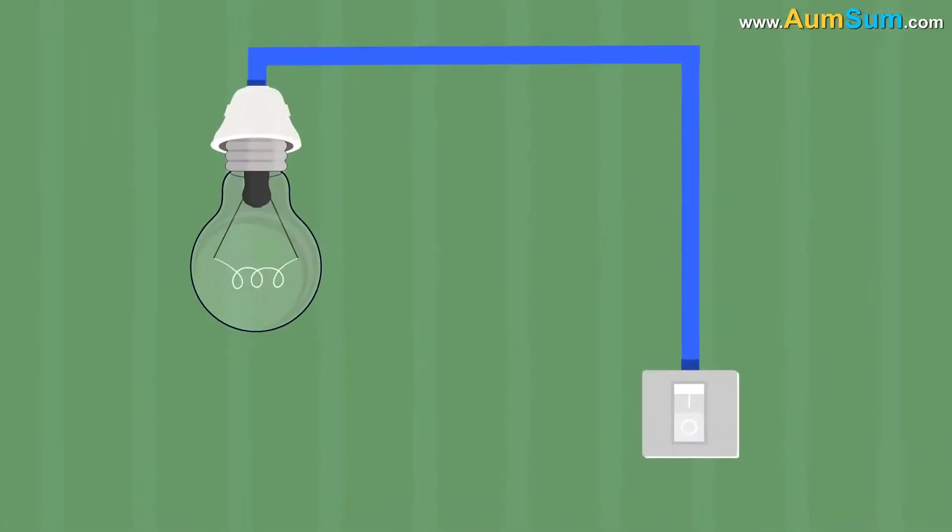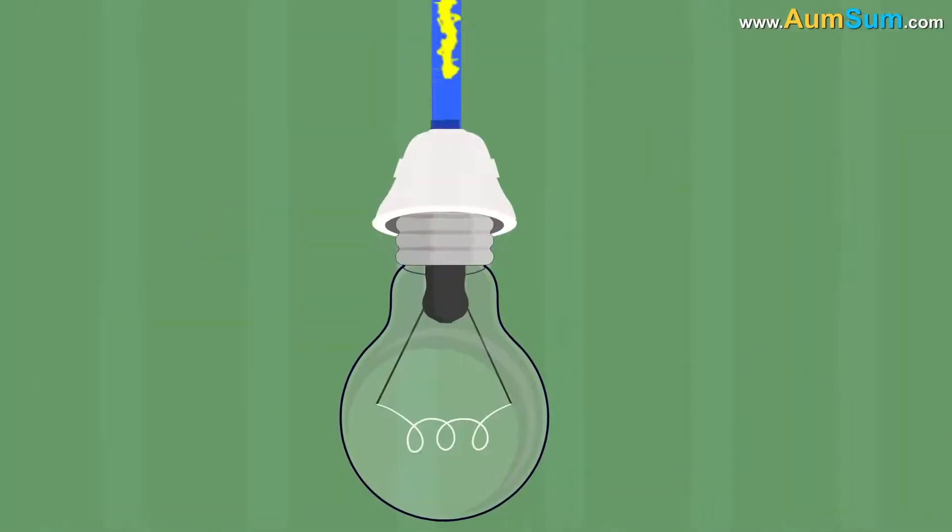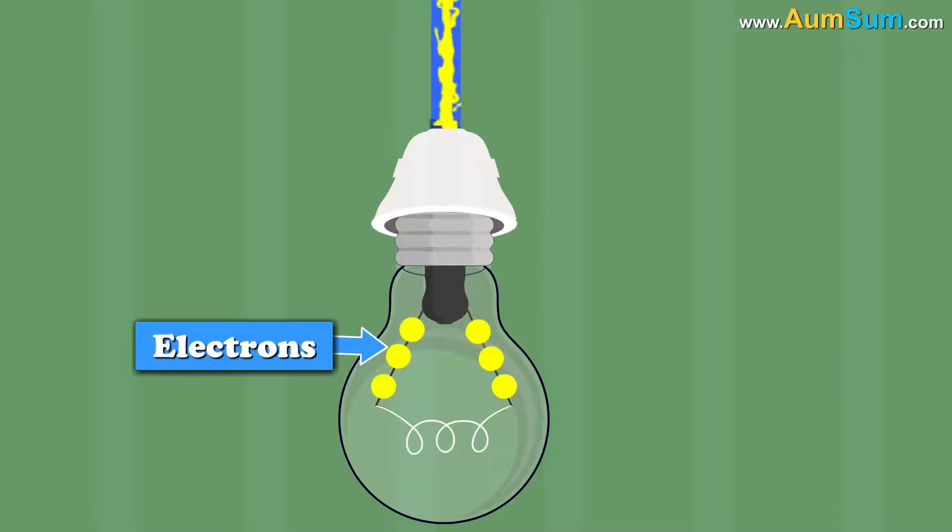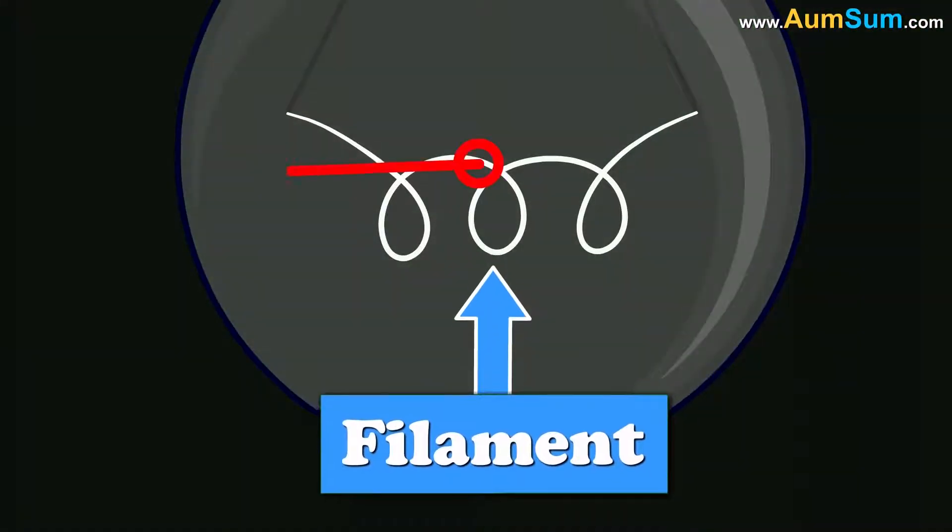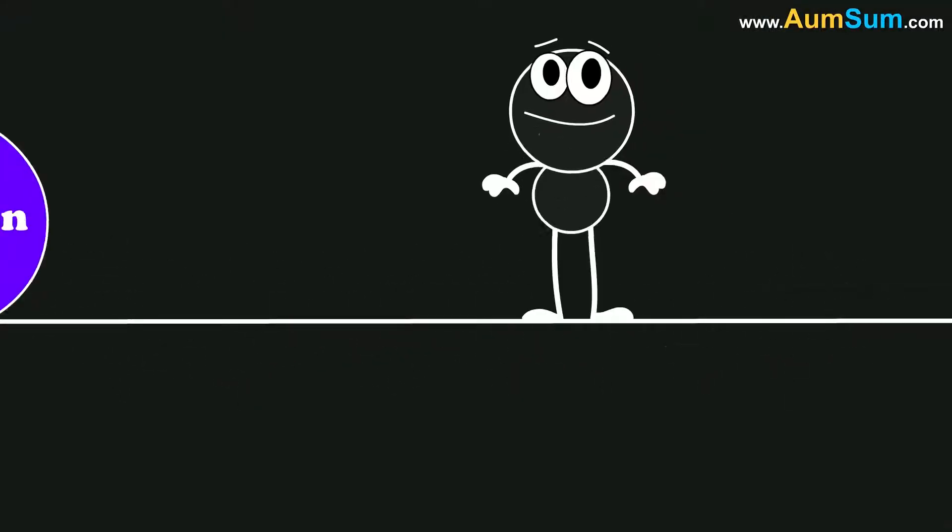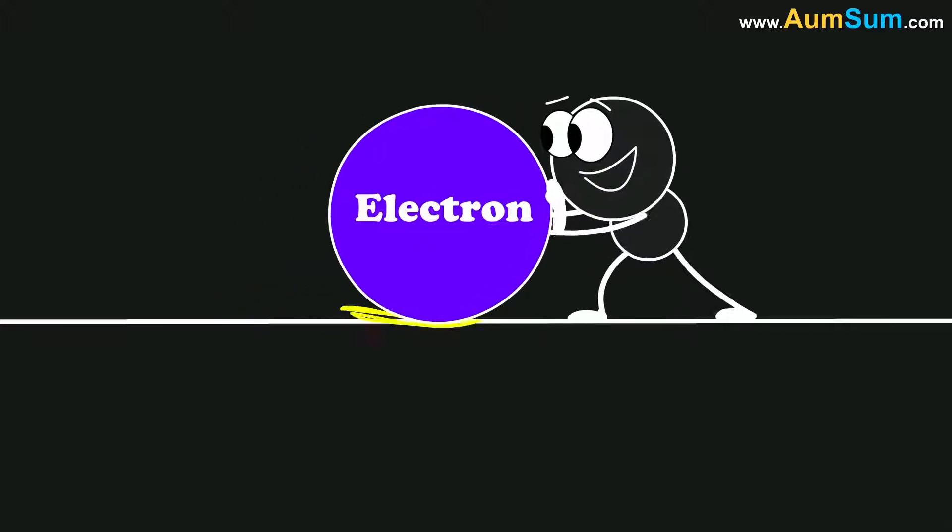When we switch on the bulb, electricity starts flowing. This electricity or the flow of electrons is hindered by the filament of the bulb. The filament is usually made of tungsten as it has a high melting point. A long and thin filament wire offers higher resistance to the flow of electrons.